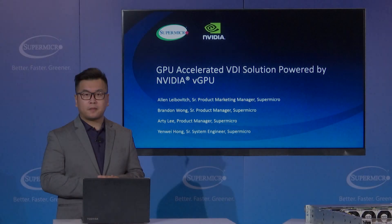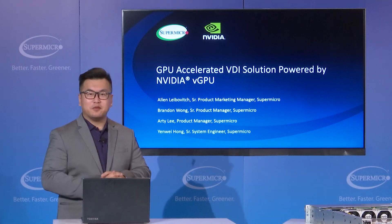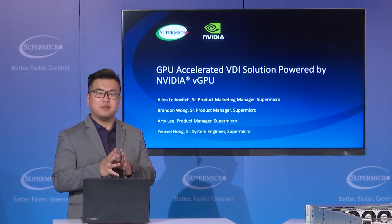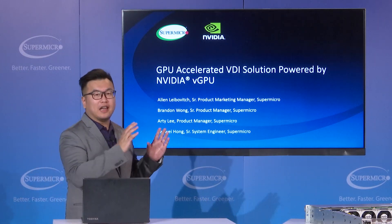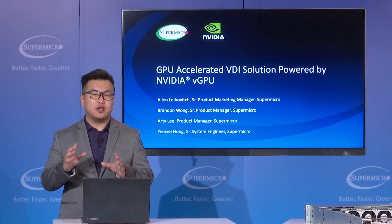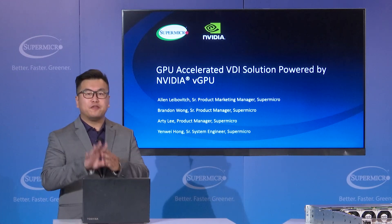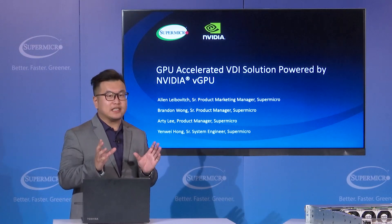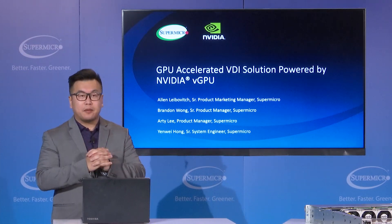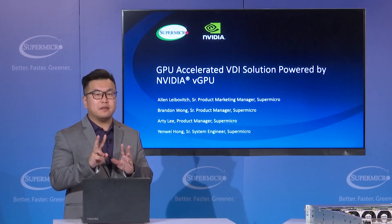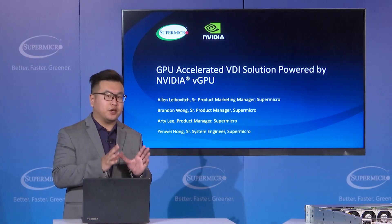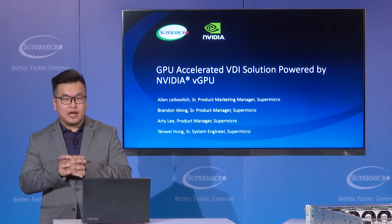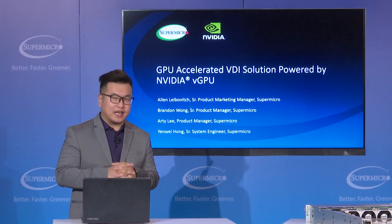Thanks, Artie and Brandon. Now Yanwei Hong, our product manager, is going to give a demo of our VGPU solution. I'm Yanwei. I've already set up a system in our lab — it's a 2029U E1 CRT model Ultra server with four RTX 6000 GPUs installed. I've created two different types of VMs on the box: one with the virtual GPU resource and the other without the virtual GPU resource. Let's take a look at the demo.